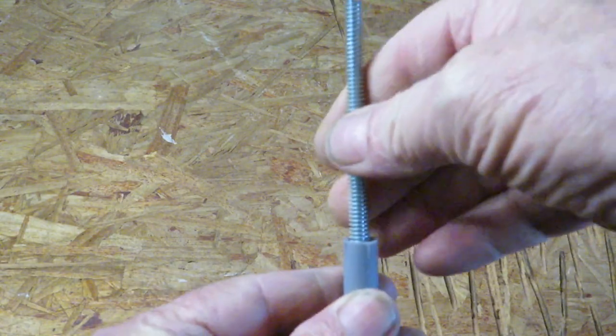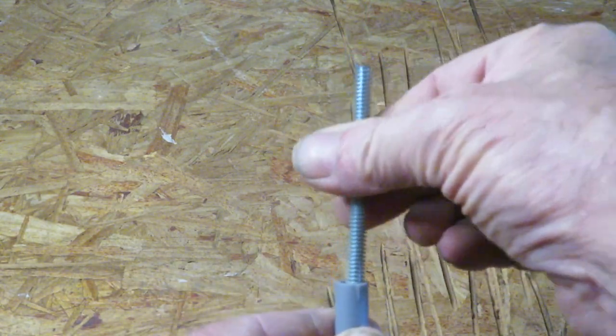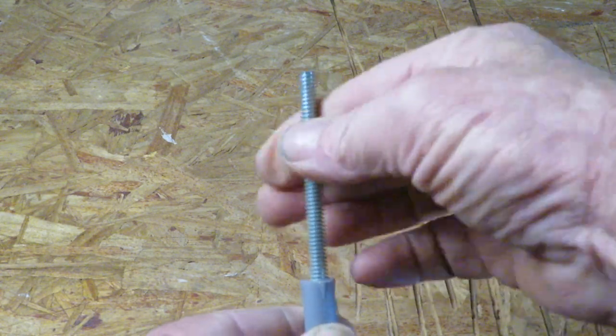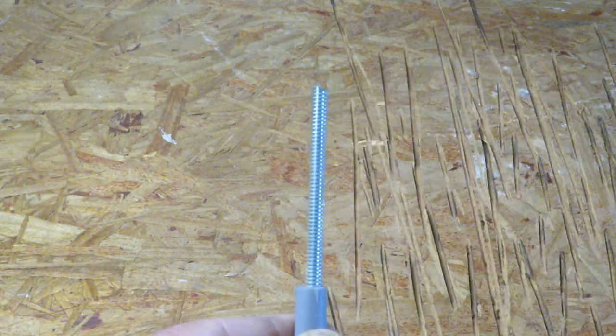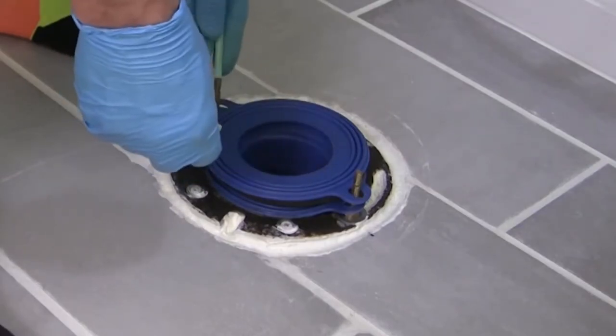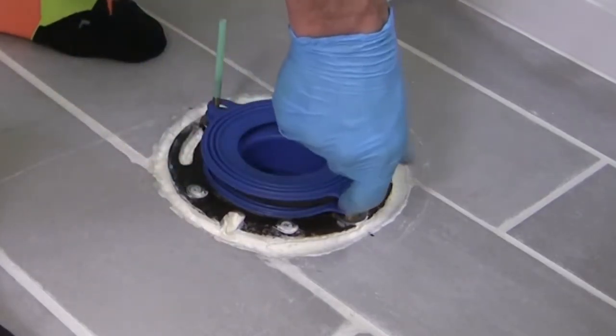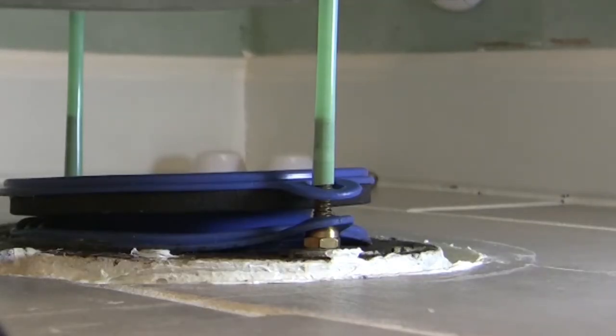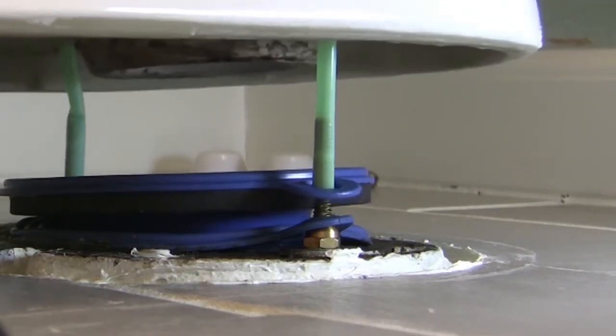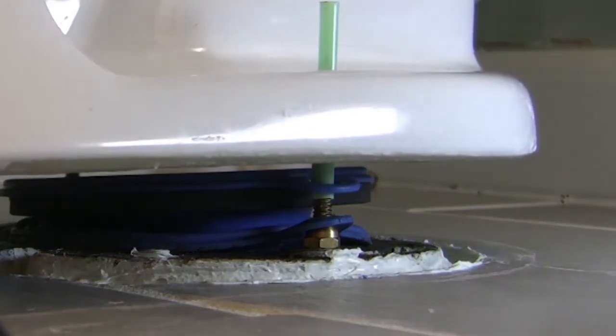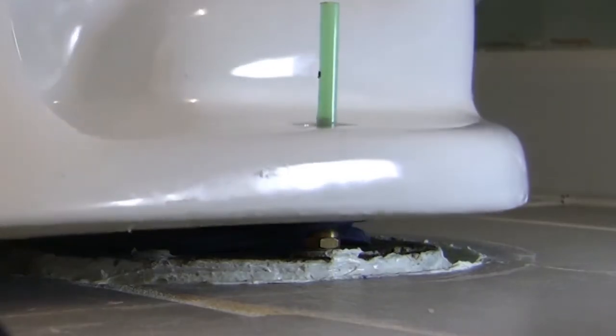If we cut the heads off two long screws or bolts, we can use these as guides for placing the bowl in the right position, screwing them into the wall plugs inserted in the floor. This is very useful because once the wax has been squashed, we can't move the bowl.